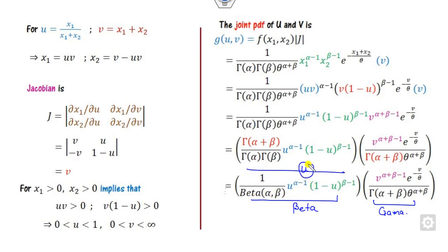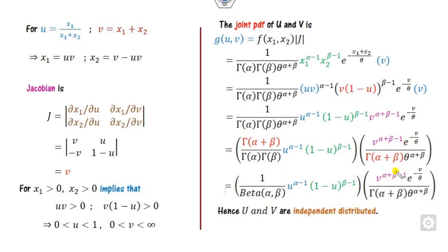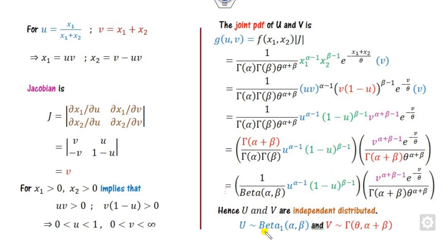You can see that this part depending on v is nothing but the beta distribution, and this part depending on u is again a gamma distribution. Since the joint density factors into a function of u alone and a function of v alone, u and v are independent. So u follows the gamma distribution and v follows the beta distribution of the first kind.